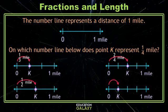In this last number line, it's split into four equal parts. And our point K is on the first tick mark, which means it represents 1 fourth mile. That's the answer we were looking for.